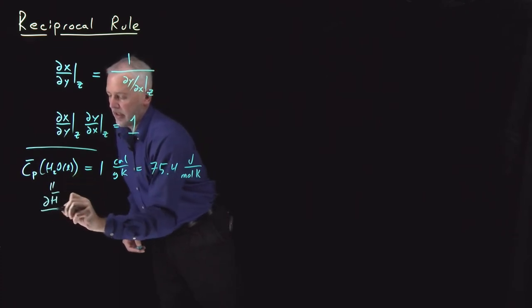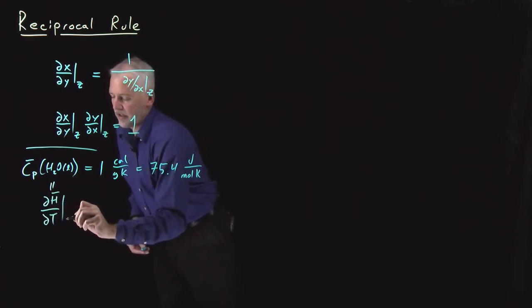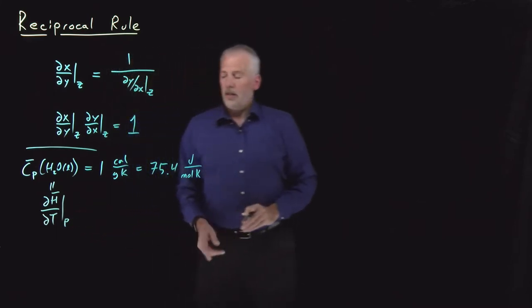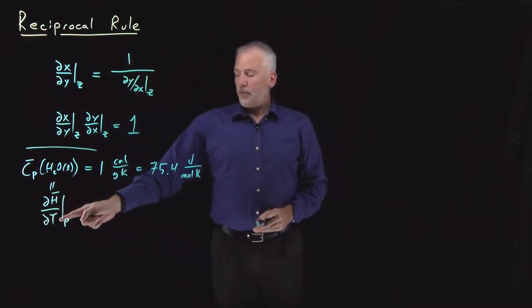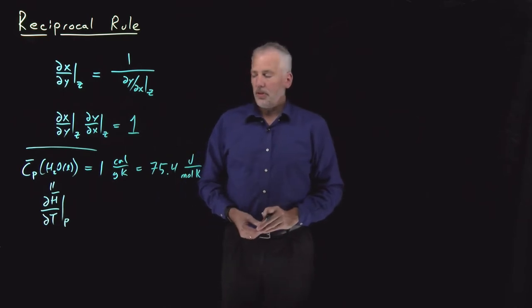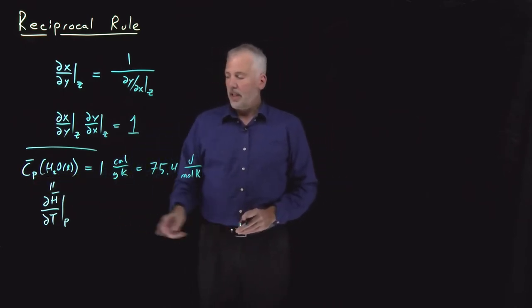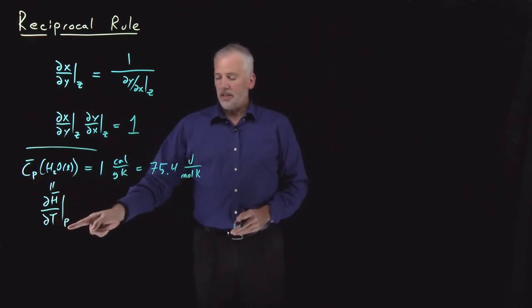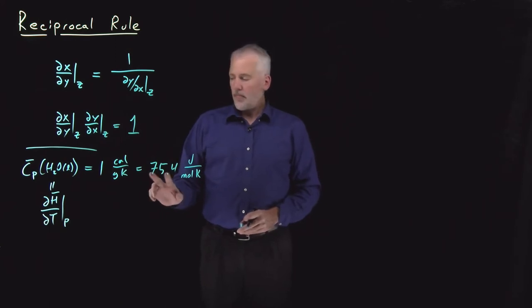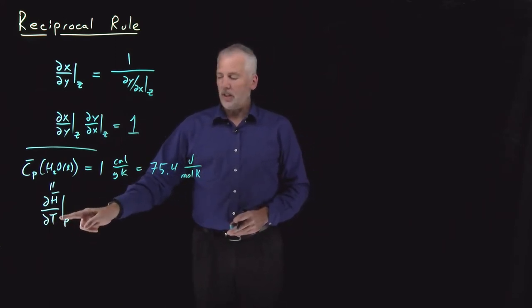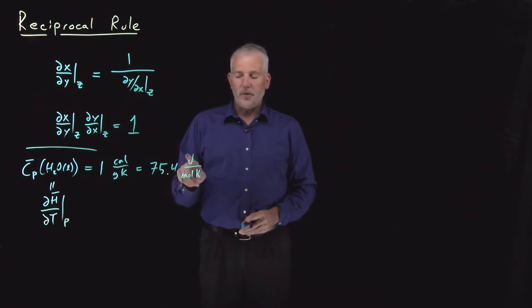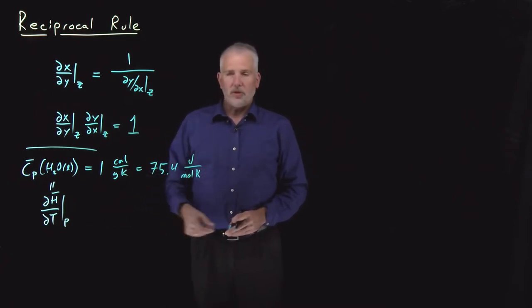...by definition, the rate of change of the enthalpy as I change the temperature at constant pressure. That's the constant pressure heat capacity. This is telling us dH dt at constant P equals this number. What that means is in order to raise the temperature by 1 kelvin, it costs me 75 joules per mole.